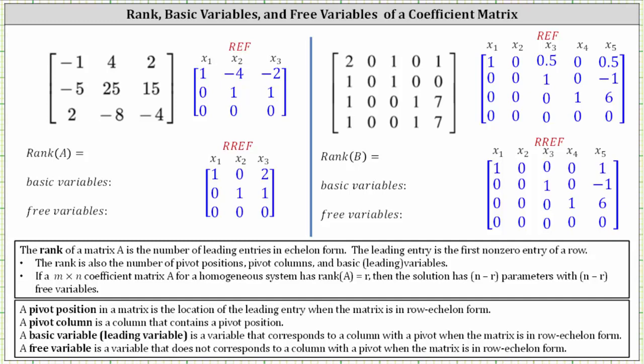This lesson will show how to determine the rank, basic variables, and free variables given a coefficient matrix. The rank of a matrix A is the number of leading entries in echelon form — this can be row echelon form or reduced row echelon form. The leading entry is the first nonzero entry of a row. The rank is also the number of pivot positions, pivot columns, and basic variables.